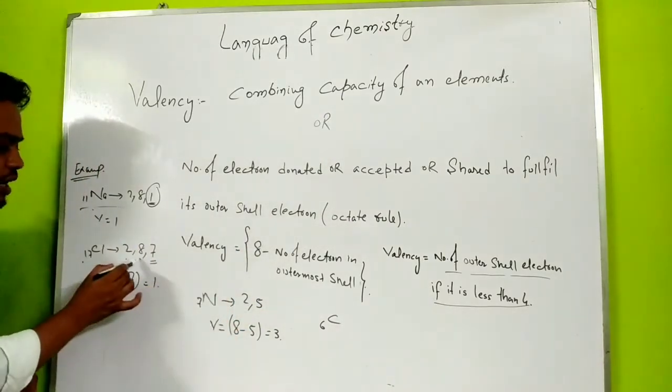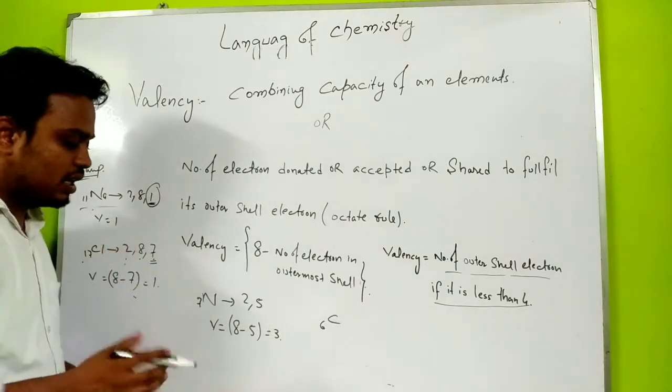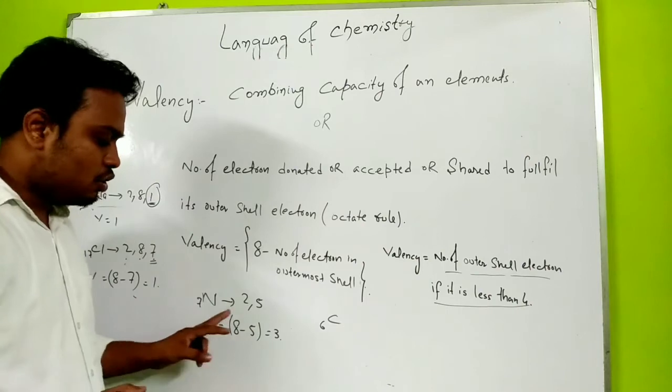For example, Fluorine has configuration 2, 7. It is more than 4, so 8 minus 7 equals 1. Nitrogen is 2 and 5, greater than 4, so 8 minus 5 is 3.